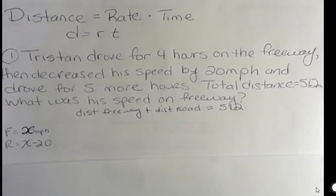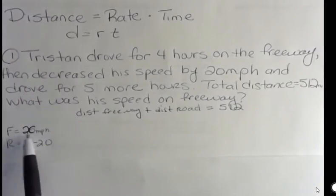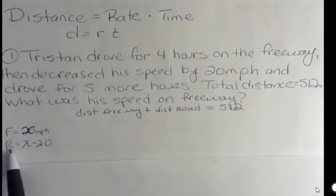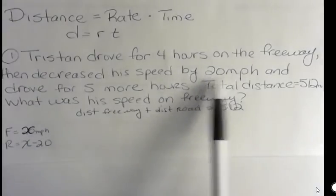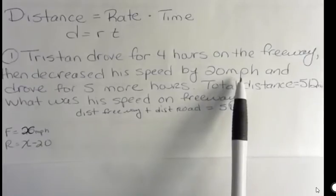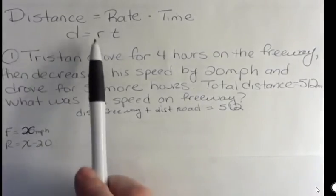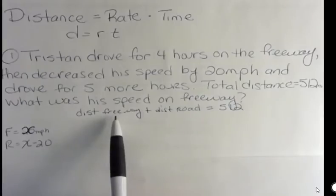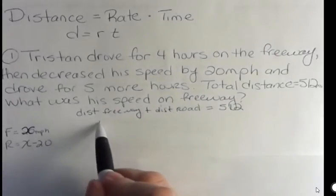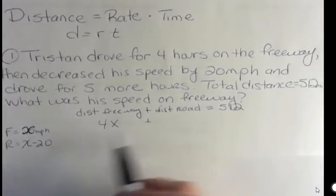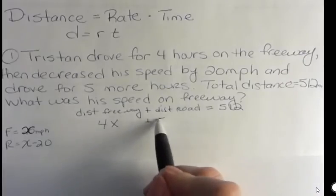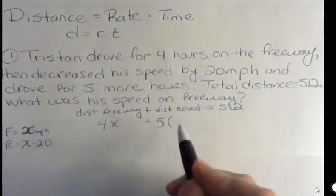So what I'm going to do is say, well, what was his rate on the freeway? I'm calling that F. On the freeway, his rate was X. I wrote it funny because I was writing over something. He was going X miles per hour. When he got to the road, he was going X miles per hour minus 20 because he decreased his speed by 20. So instead of distance, I'm going to call this rate and time. On the freeway, he was driving four hours at a speed of X. I don't know what that was. On the dirt road, he drove for five more hours and his speed was X minus 20.